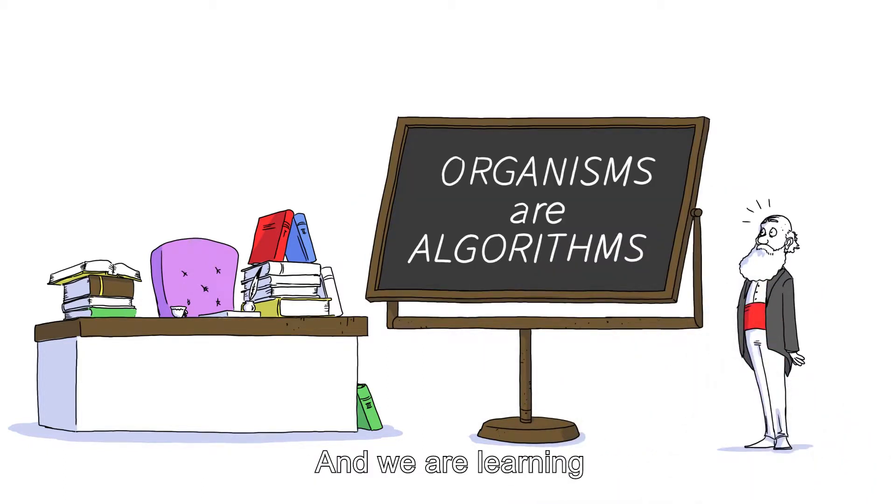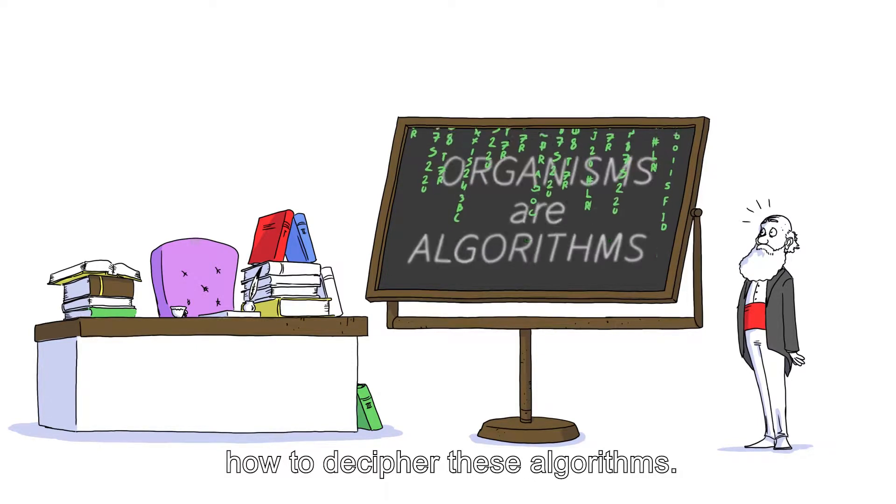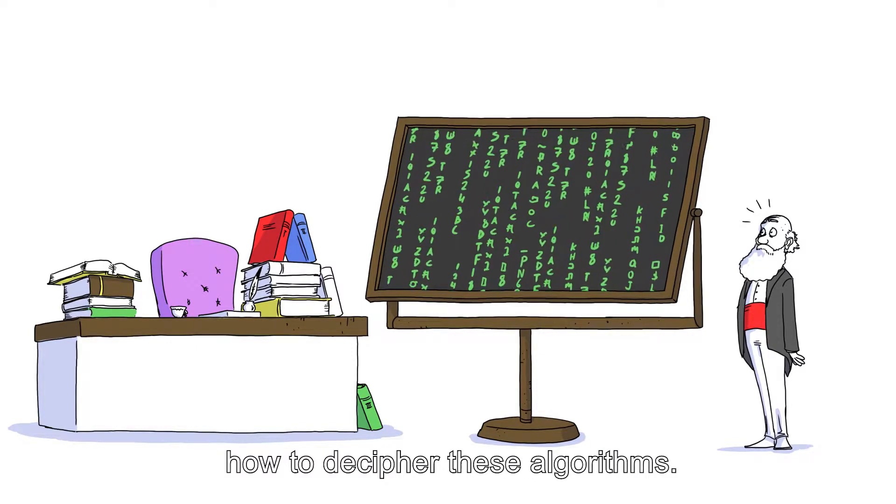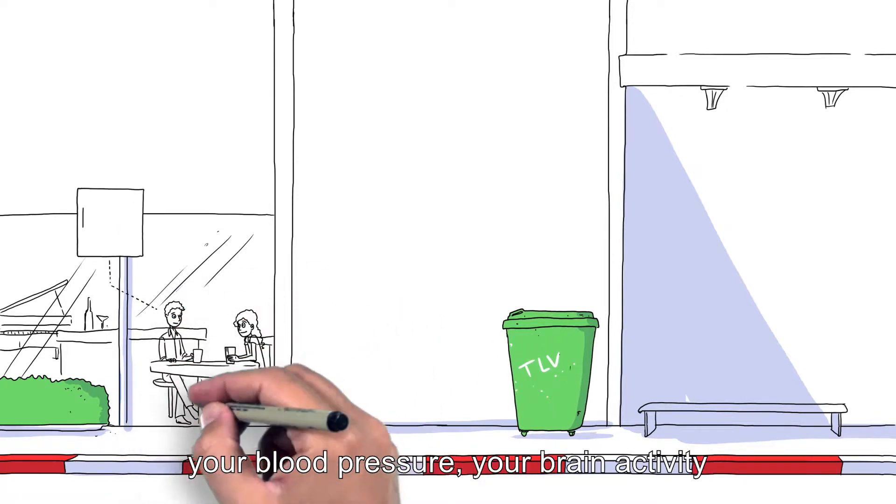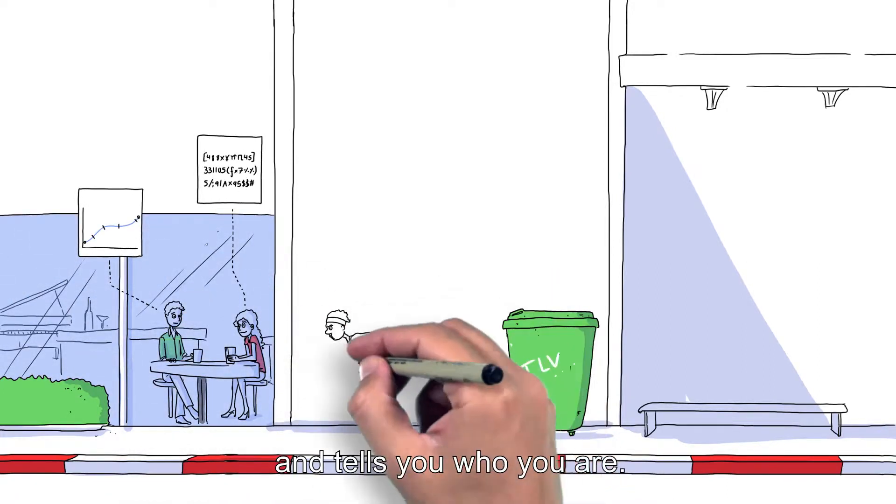And we are learning how to decipher these algorithms. The algorithm tracks your eye movements, your blood pressure, your brain activity, and tells you who you are.